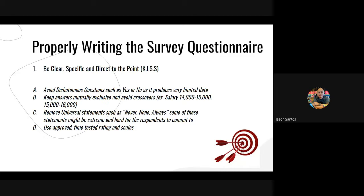Keep answers mutually exclusive and avoid crossovers. For example, if your salary range ends at 15,000, don't start the next option also at 15,000 — the respondent will be confused. Put a clear boundary between the two. If one range ends at 15,000, then start the next at 15,001, or to avoid this entirely, you could write 14,000 to 14,999 — just avoid crossovers and make the options mutually exclusive.